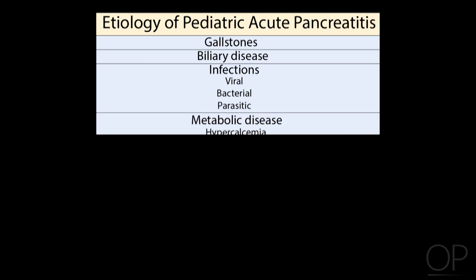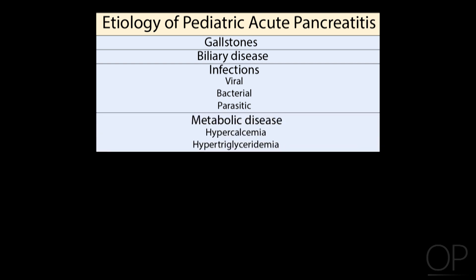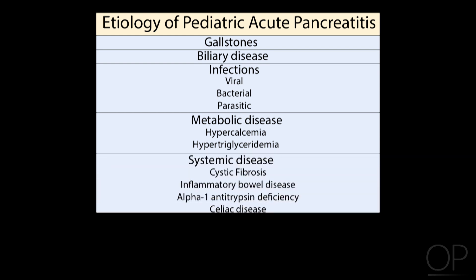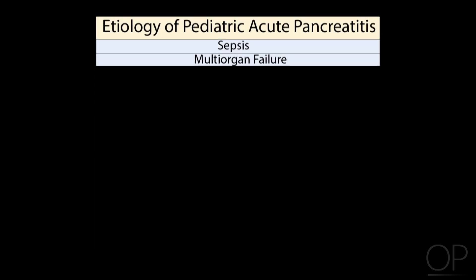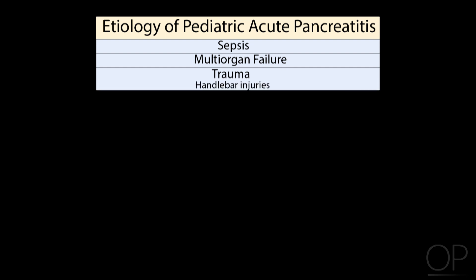Metabolic diseases such as hypercalcemia or hypertriglyceridemia are also causes. Pancreatitis can be associated with systemic diseases such as cystic fibrosis, inflammatory bowel disease, alpha-1-antitrypsin deficiency, celiac disease, HUS, HSP, and Kawasaki's disease, just to name a few. Pancreatitis can also be seen in the setting of sepsis or multi-organ failure. Trauma, or seat belt or handlebar injuries, can also lead to pancreatitis.